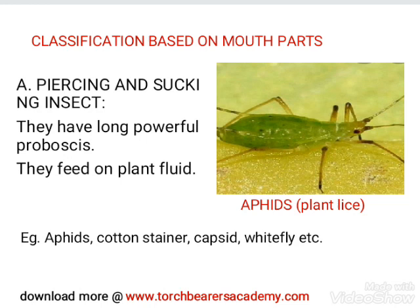Classification of insect pests based on mouth parts. Insect pests are the most common form of crop pests, so they are further divided into three categories based on their mouth parts. We have the piercing and sucking insects, the biting and chewing insects, and the boring insects. For each category, we will look at the mouth parts they possess, what they feed on, and examples.